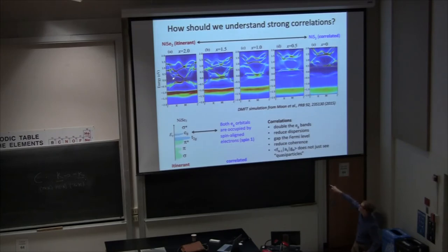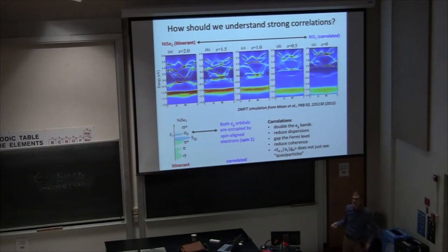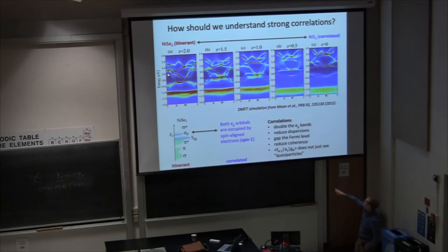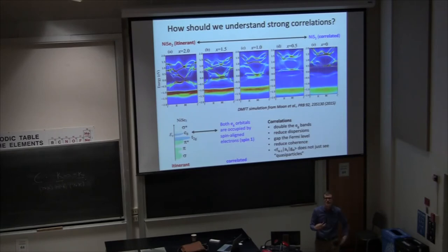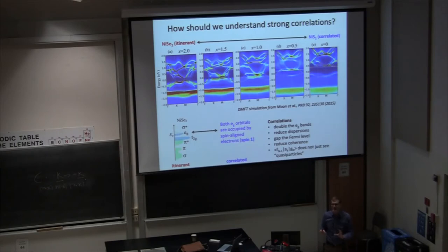This is a model that tries to see what correlations do. First you have states at the Fermi level (zero energy). You start turning on correlations — dispersions get flatter, stuff gets broader, it gets weird. Eventually you don't have anything at the Fermi level. There's no model everyone agrees with for how this happens or what's going on in the middle. So being able to measure how this picture evolves is of fundamental importance to our understanding, particularly for quantum materials where strong correlations are important. Experiment kind of needs to lead the way on this.